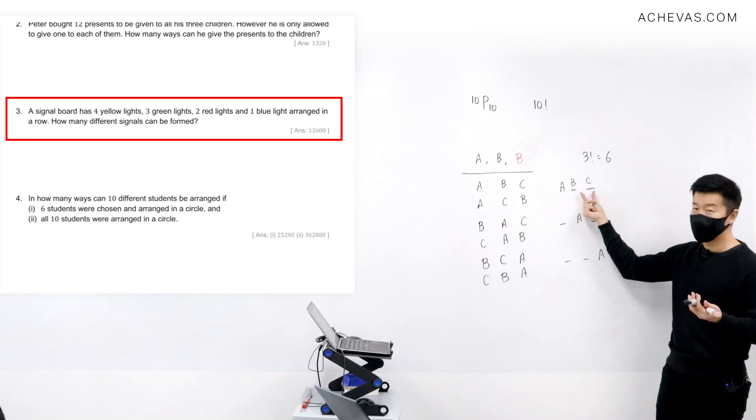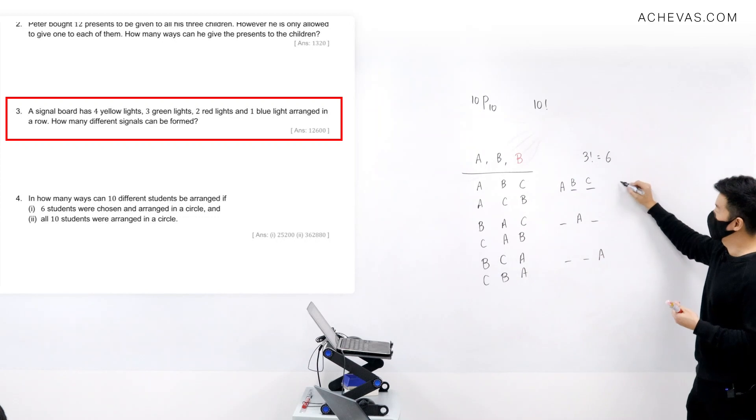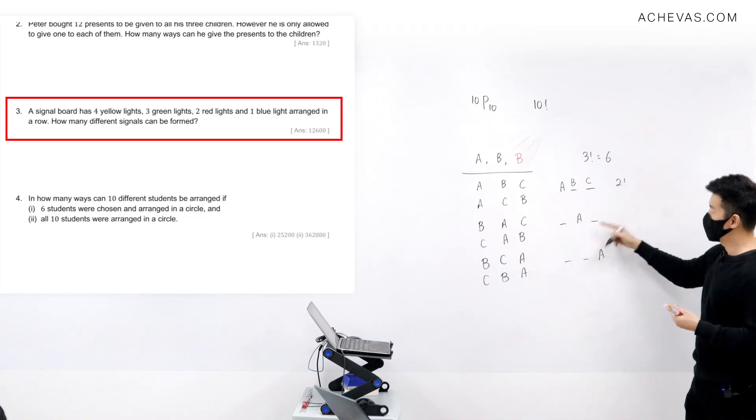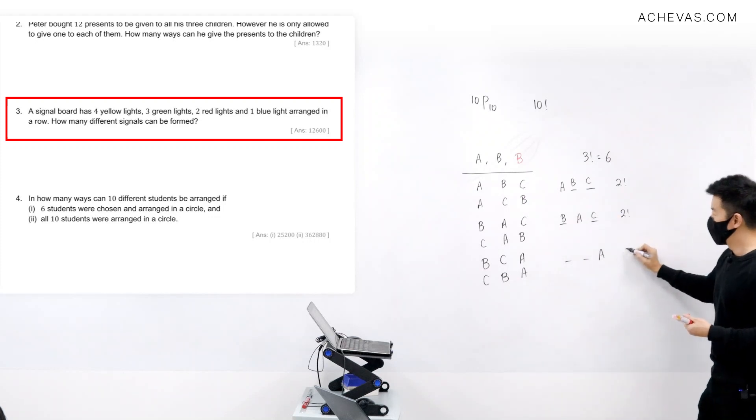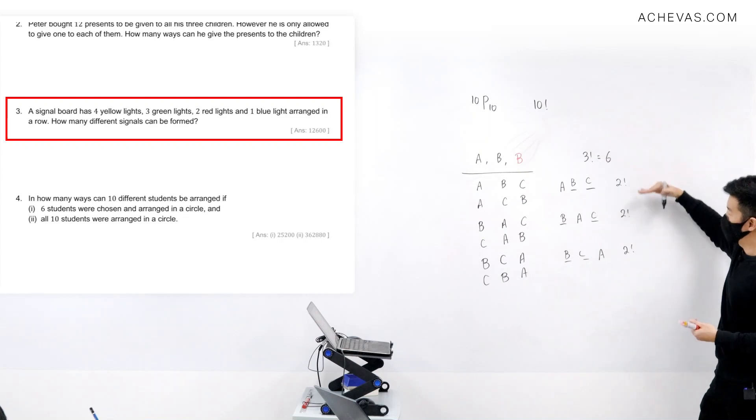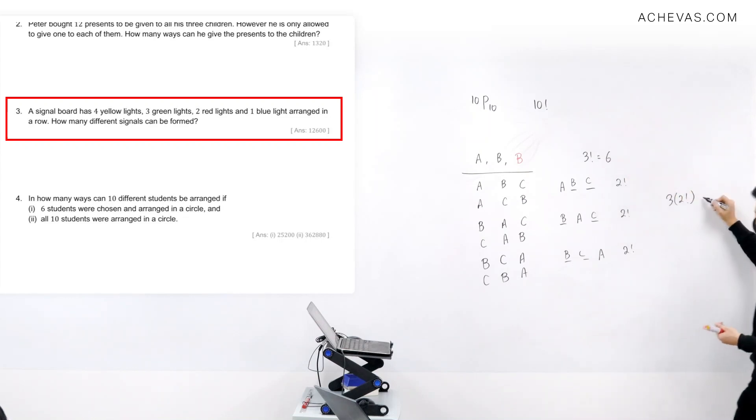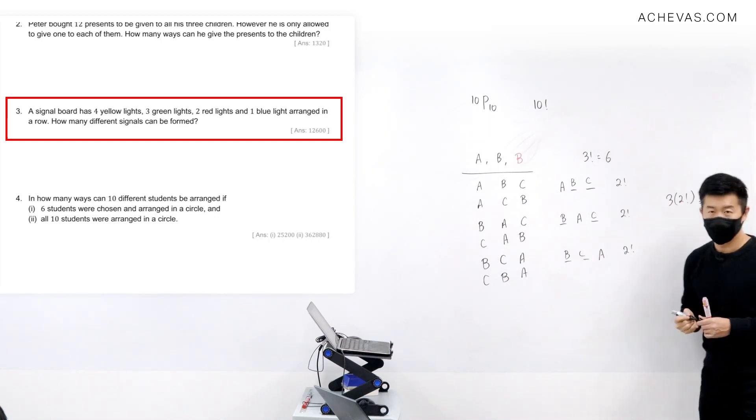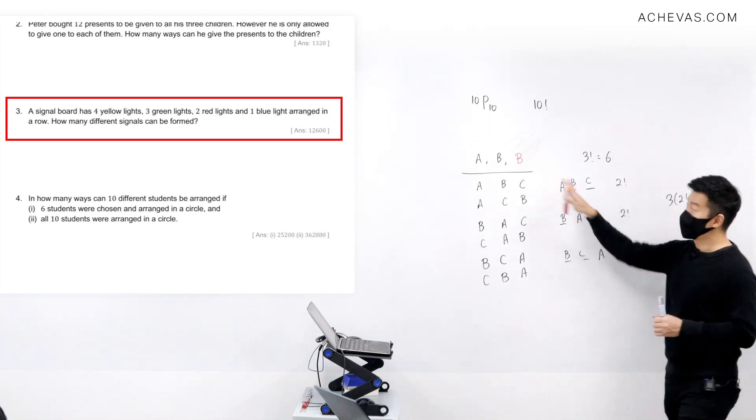What is the number of ways to arrange B and C here? Two factorial. So this will give me a 2 factorial, B and C here, this will give me a 2 factorial. So assuming B, C here or C, B here, it is going to be another 2 factorial. So we have one, two, three, three times of 2 factorial, which gives us this six.